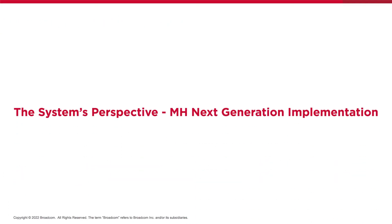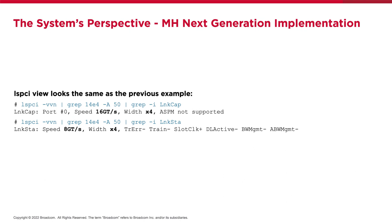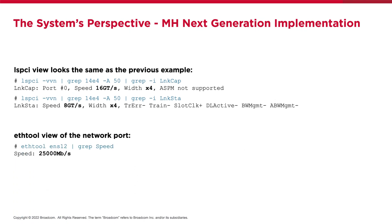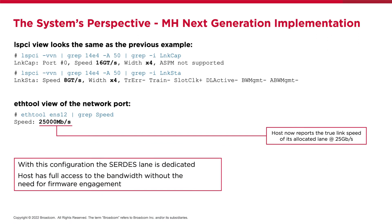Now let's see what this looks like from one of the hosts. It's all the same from the PCIe perspective. The key difference is seen via ETH tool — now we see a link speed of 25 gig, which is dedicated and which this host will have full access to.